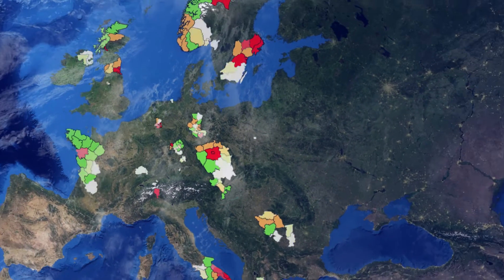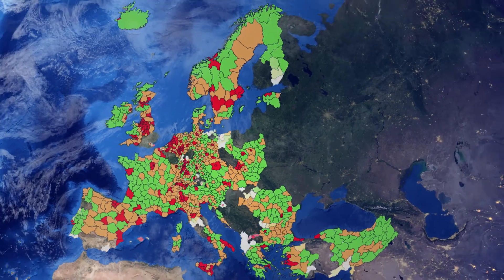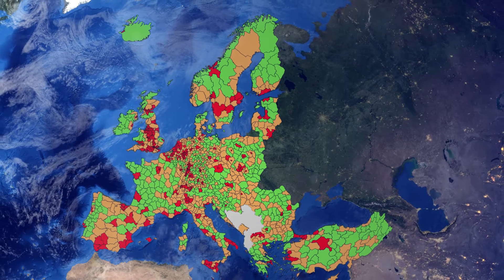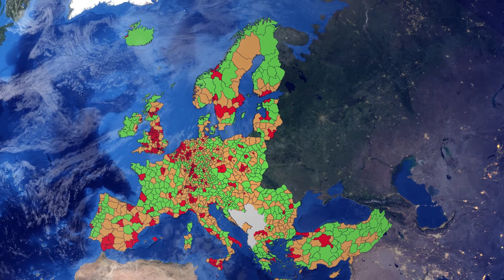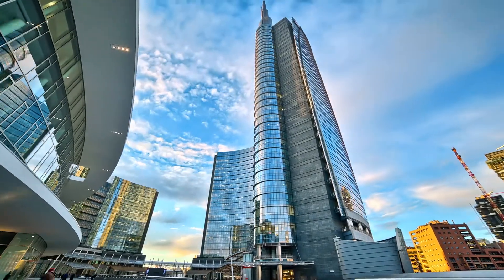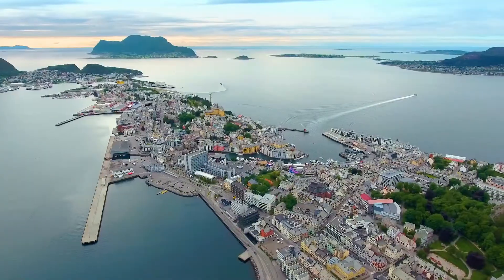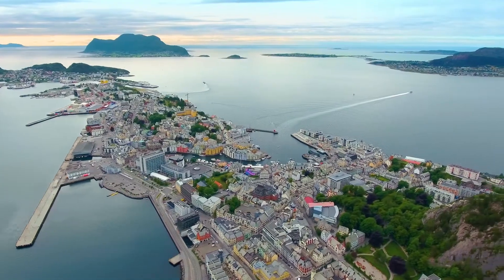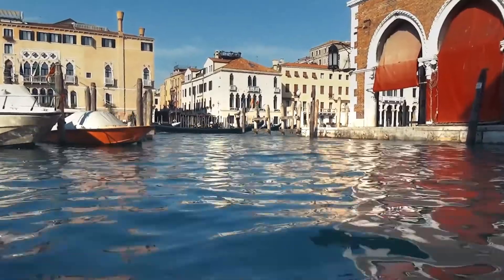NUTS 3 regions are classified in a number of territorial typologies in order to address particular challenges which can be identified by grouping the regions. Urban regions work differently from rural ones, and coastal regions often have unique characteristics like an ocean-centric economy.